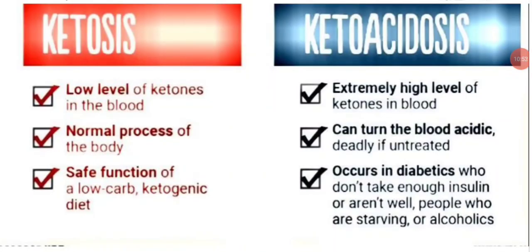Keto acidosis is very dangerous and may result in coma or even death. The basic difference: ketosis involves low levels of ketones in the blood and is a safe, normal process during low-carbohydrate or ketogenic diets. Keto acidosis involves high ketone levels, turns the blood acidic, and is deadly if not treated in time. It occurs in diabetic patients who don't take enough insulin, people who are starving, or those with very high alcohol intake. Proper administration of insulin is needed to stimulate glucose uptake and inhibit ketogenesis.